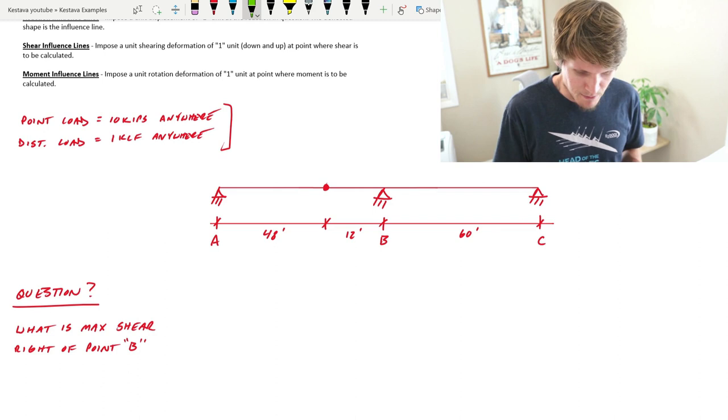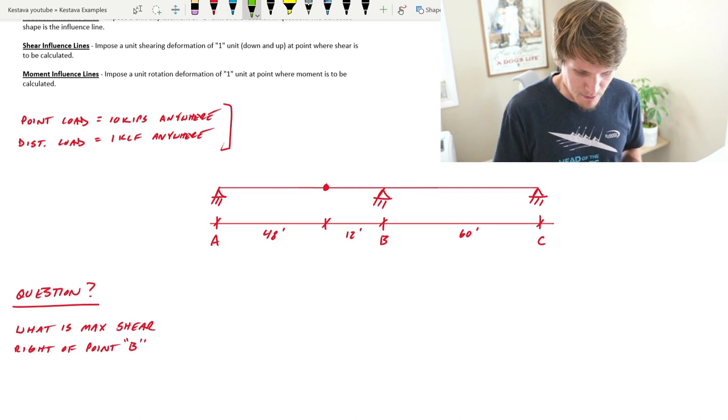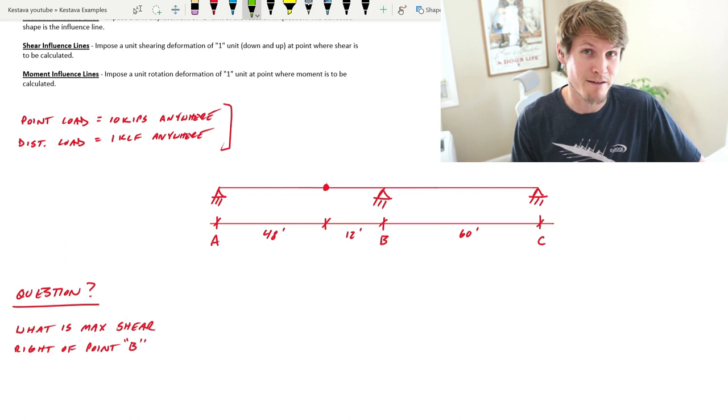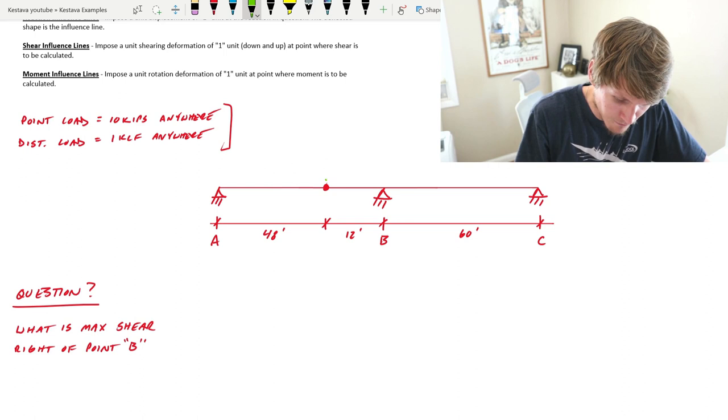We have our two-span member. Points A, B, C are our boundary conditions - they're all pin conditions. You're probably going to harp on me for thermal shrinkage and all that kind of stuff, but let's bypass that for today. If that goes right over your head, don't worry about it.